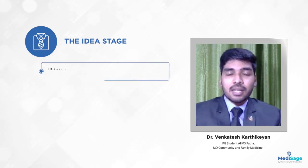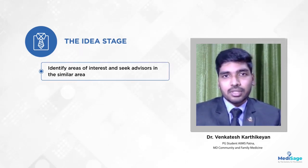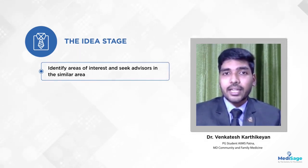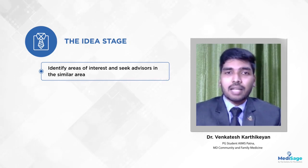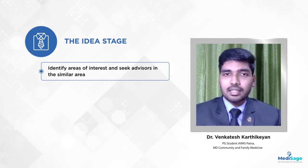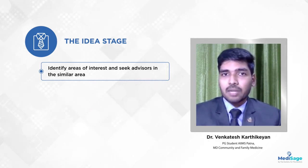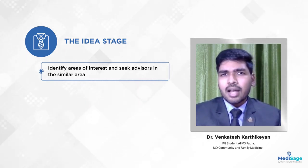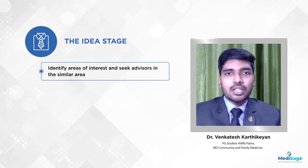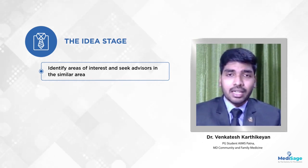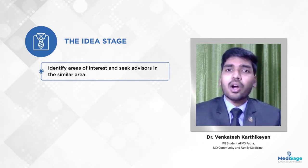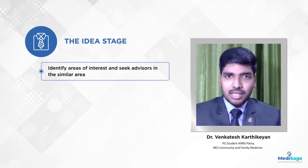I'm here to give you an outline about how to approach your PG thesis. The first step in this process is to identify the area of your interest. My area of interest was mental health, non-communicable diseases, and something related to technology. You need to find which is your area of interest according to your specialty.